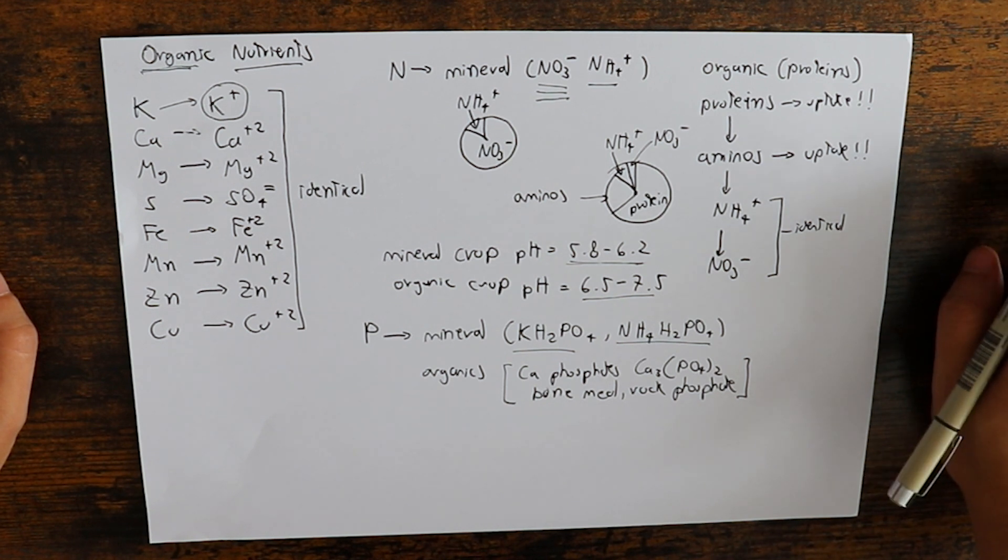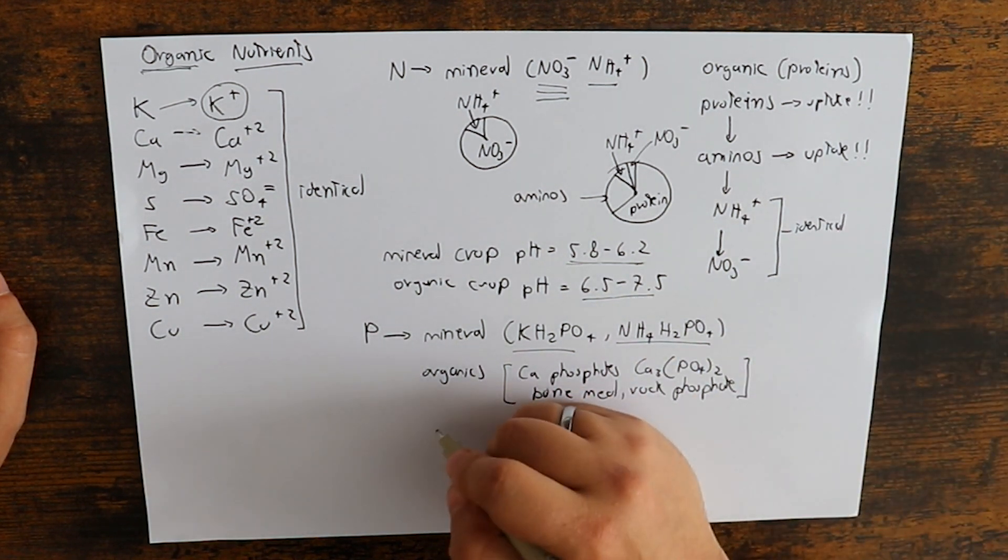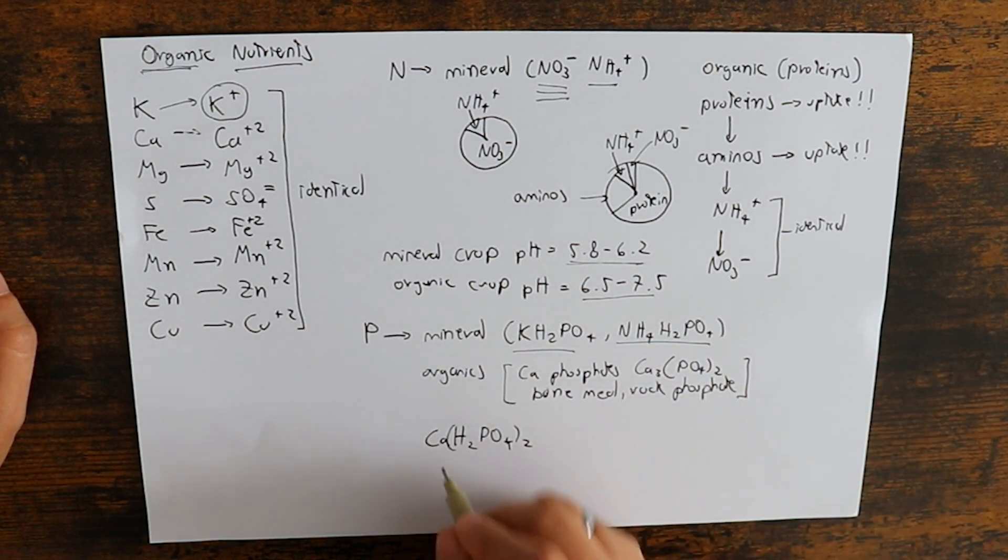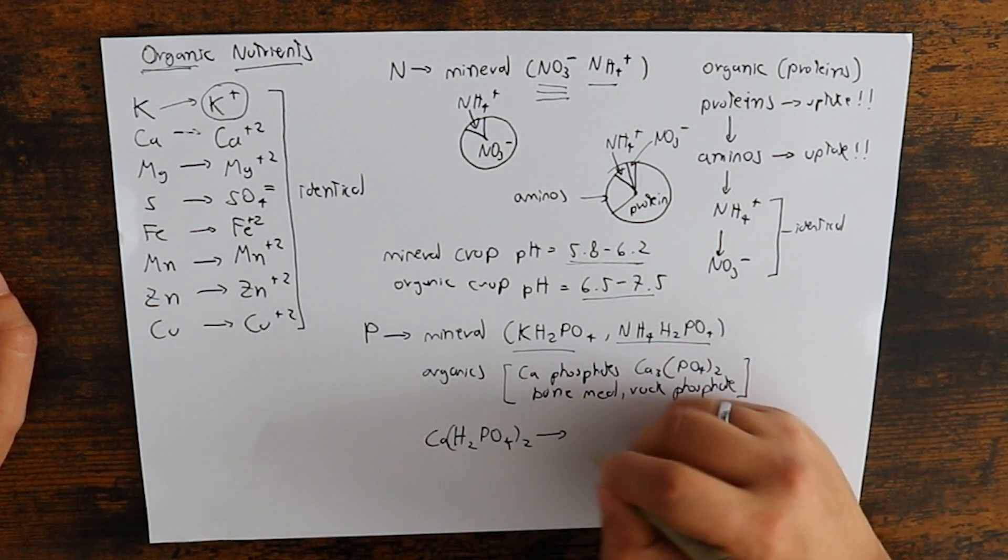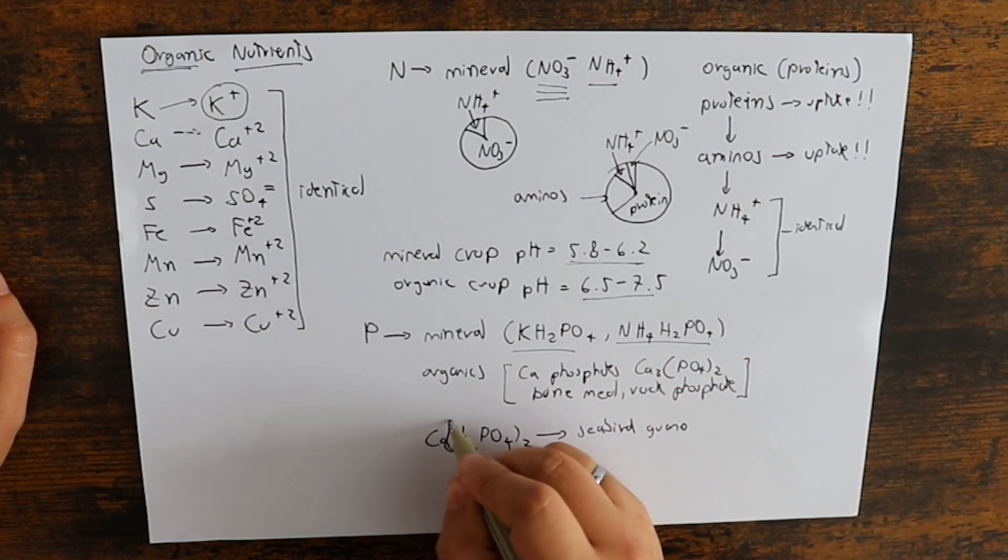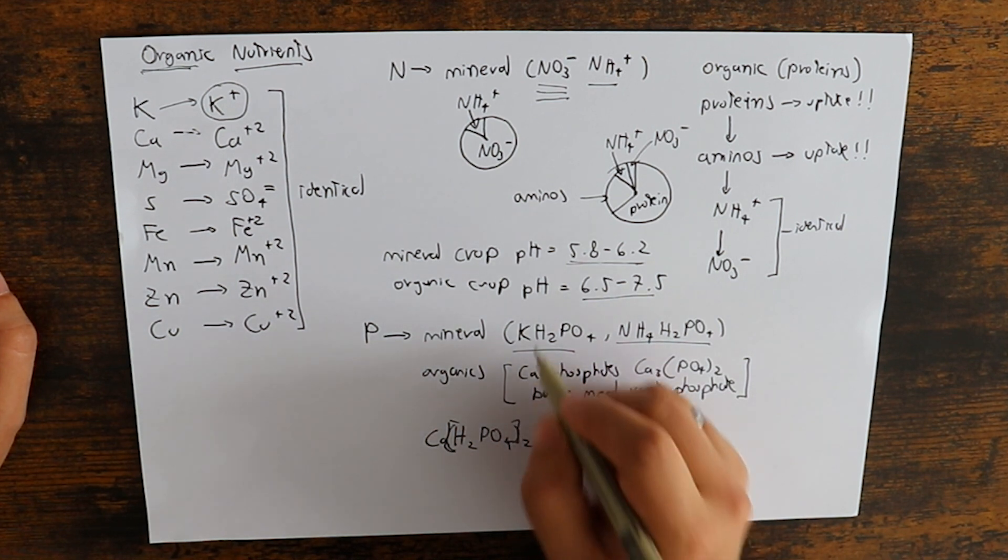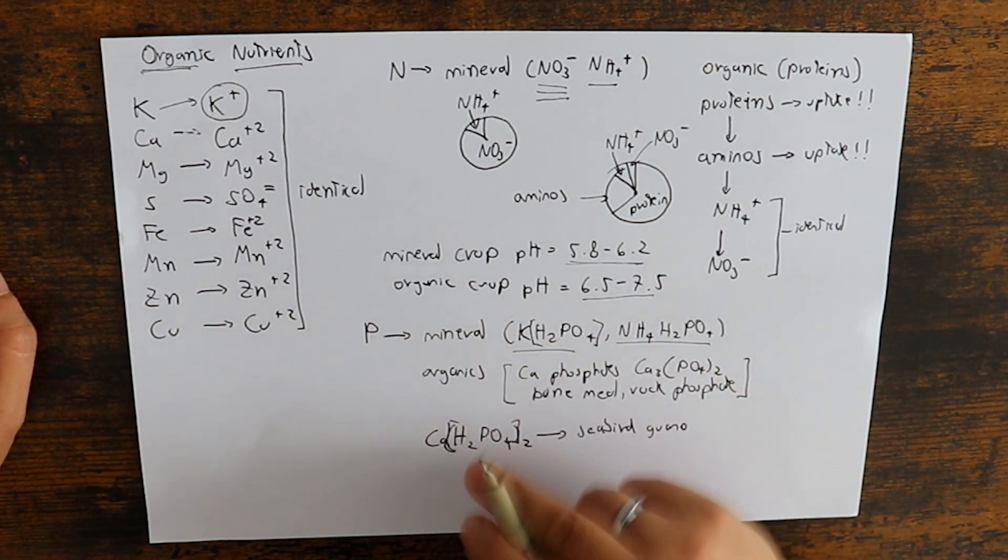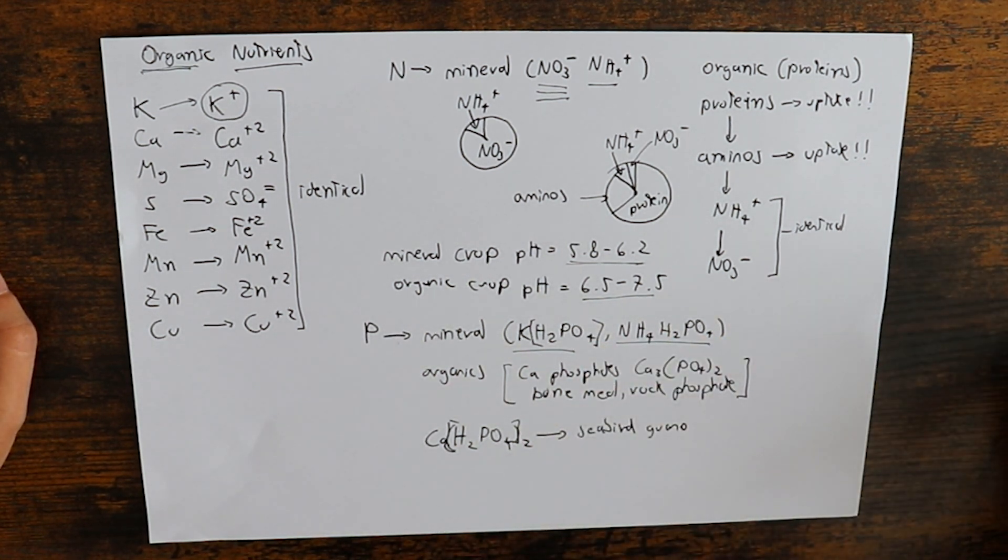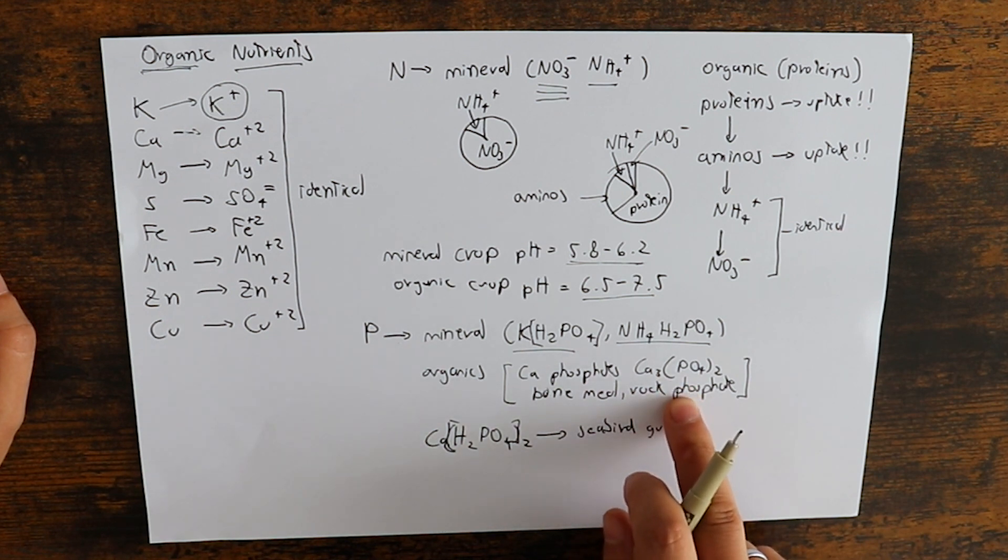So there are some soluble alternatives in the organics. For example, we have some of these monocalcium phosphate that we can find as Zeberg 1. So you have sources that are sort of exactly the same, but then mostly we use these insoluble sources that are used as amendments.